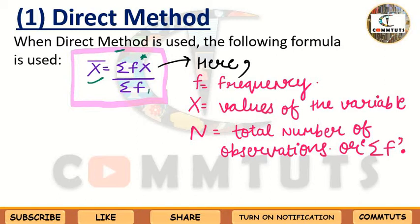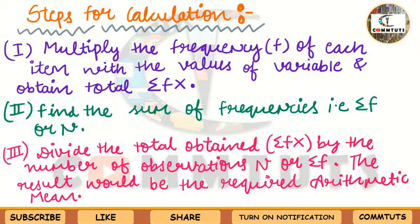The formula for the Direct Method is: x̄ = ΣFX / ΣF. Here, F means frequency, X means values of the variable, ΣF (or N) means total number of observations, and x̄ means arithmetic mean. We multiply the frequency of each item with the value of the variable to obtain ΣFX, then find ΣF (total frequencies), and finally divide ΣFX by N to get the arithmetic mean.